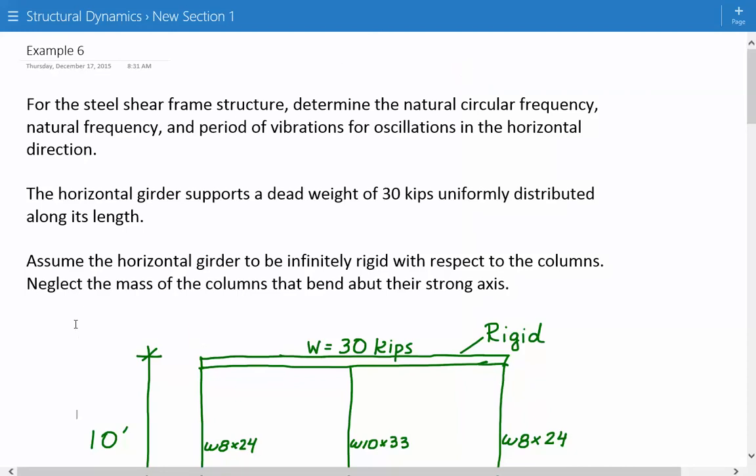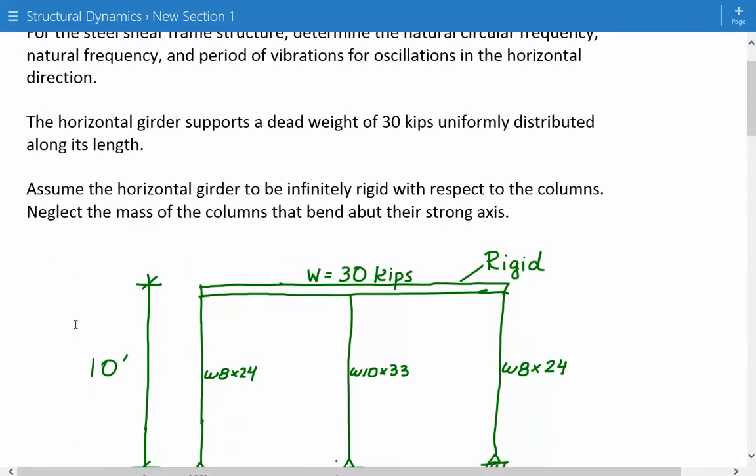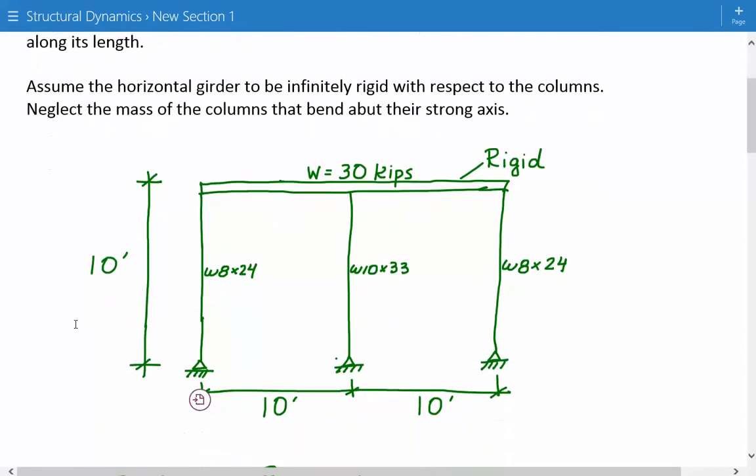So here's our figure over here. We have this shear frame structure. And here's our top girder, assumed to be rigid. And we have three columns. The outer two are W8 by 24, and the middle column is W10 by 33.